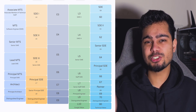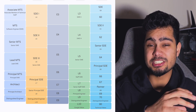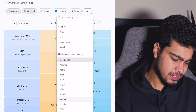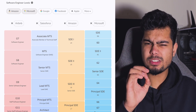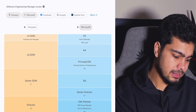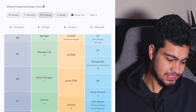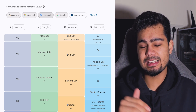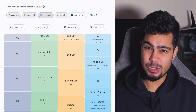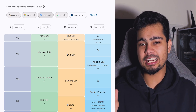Very few people reach distinguished engineer or technical fellow because many switch to engineering manager roles. On levels.fyi, you can check different profiles — software engineer, product manager, engineering manager, and more. If you want to become a software engineering manager at Microsoft, you need to reach level 63. At Amazon it's different — you can transition to a manager role even from SG-2.